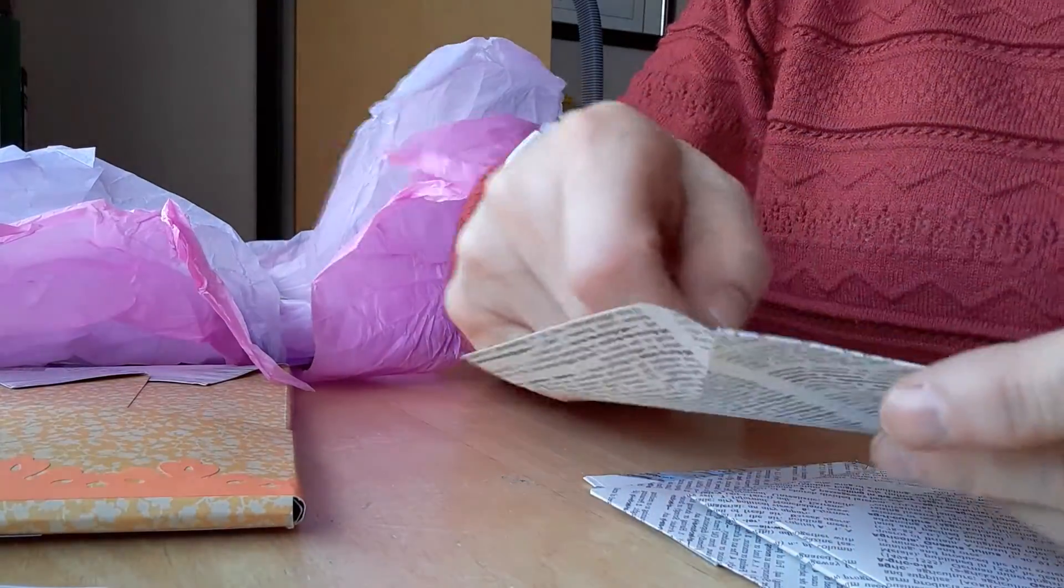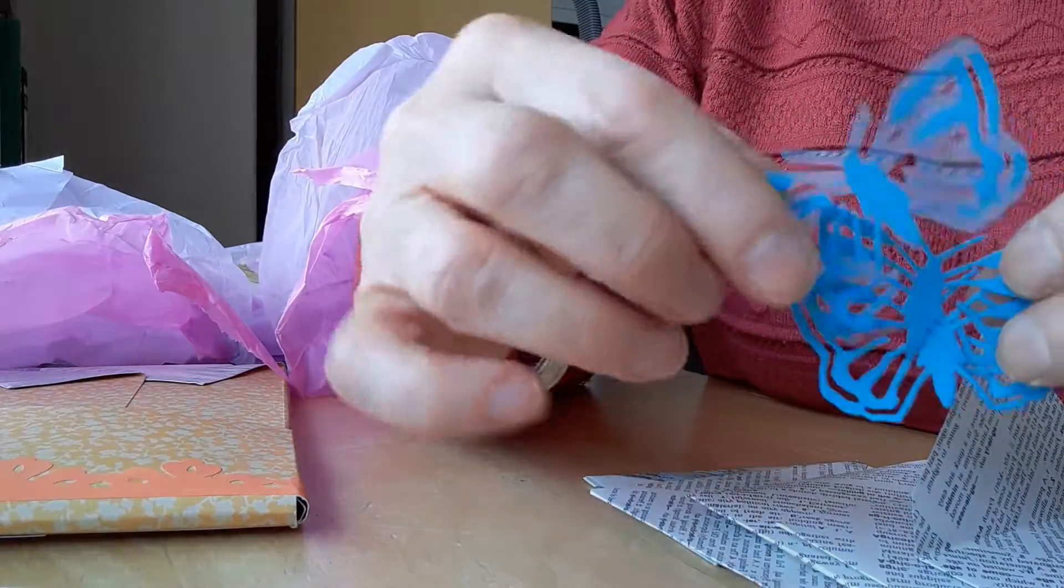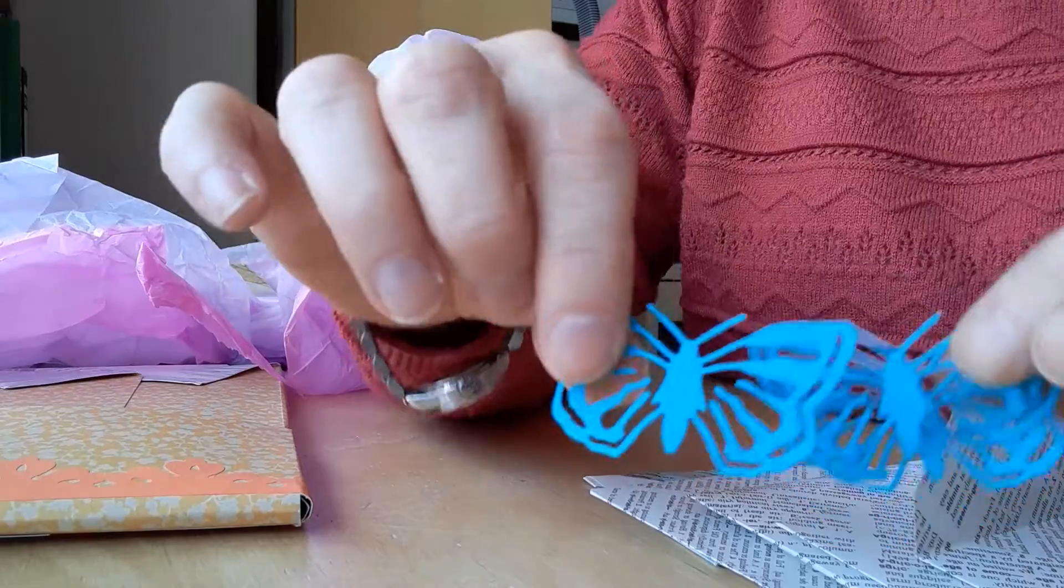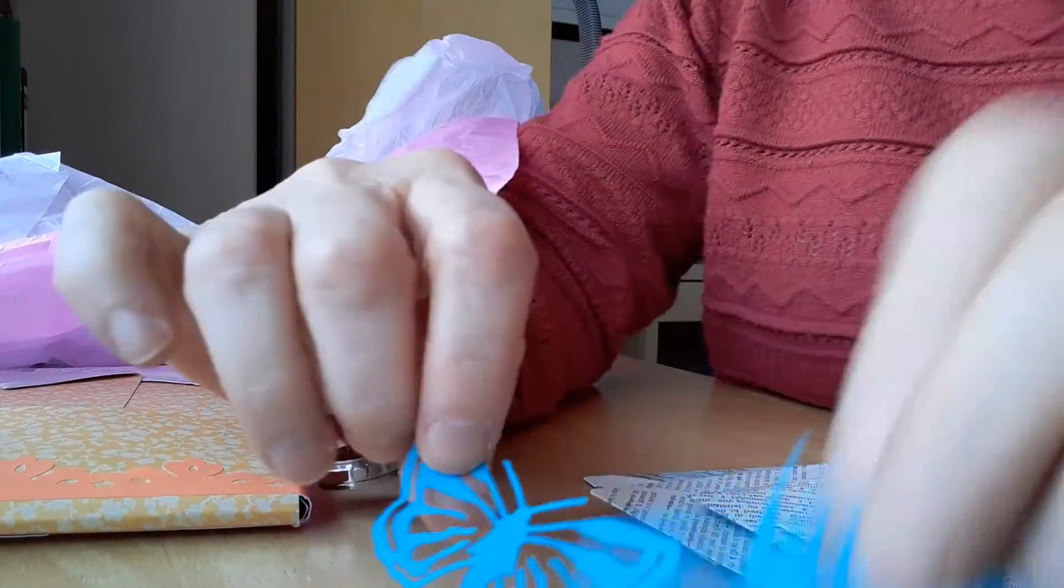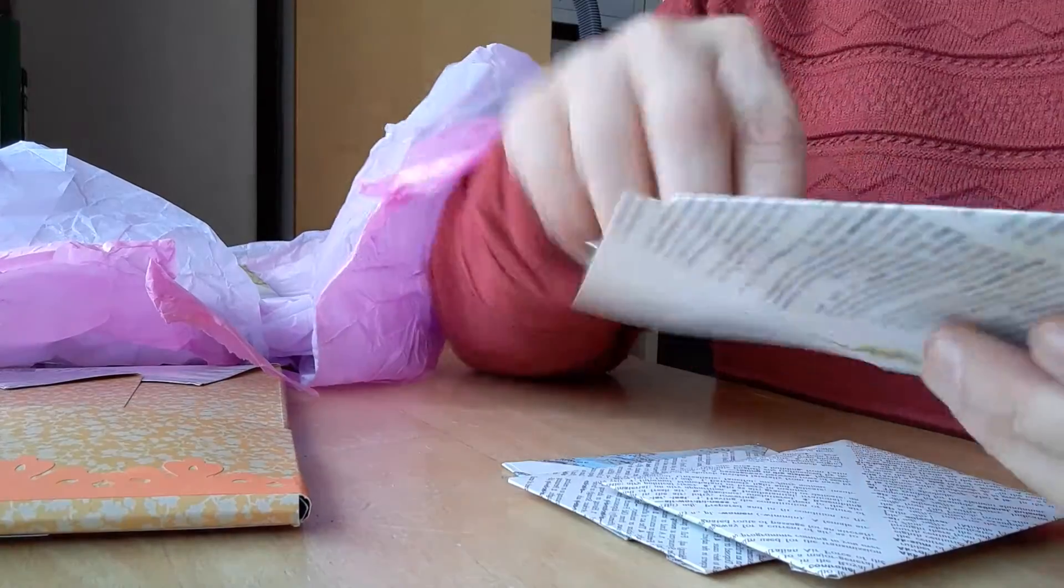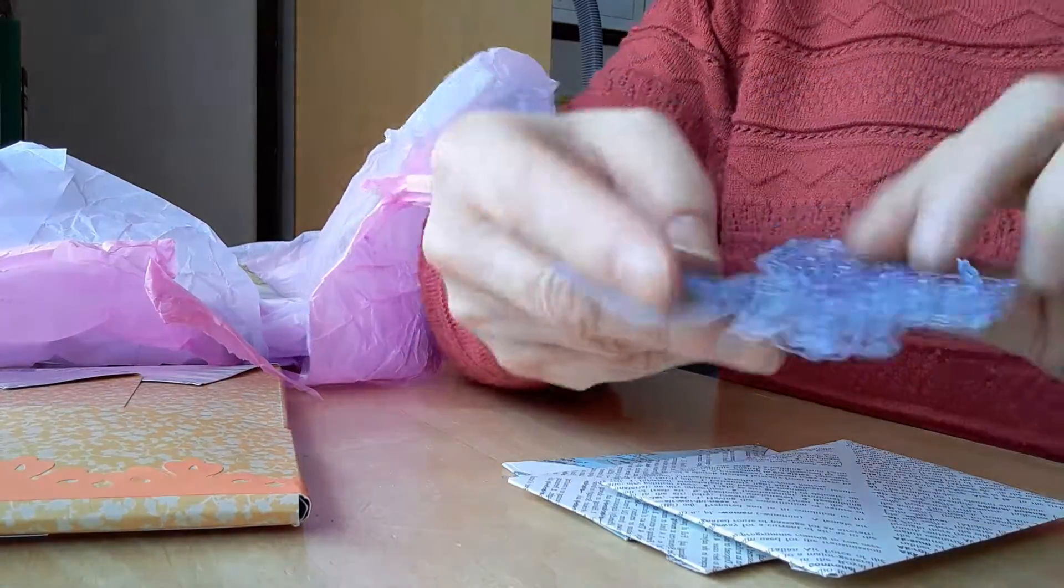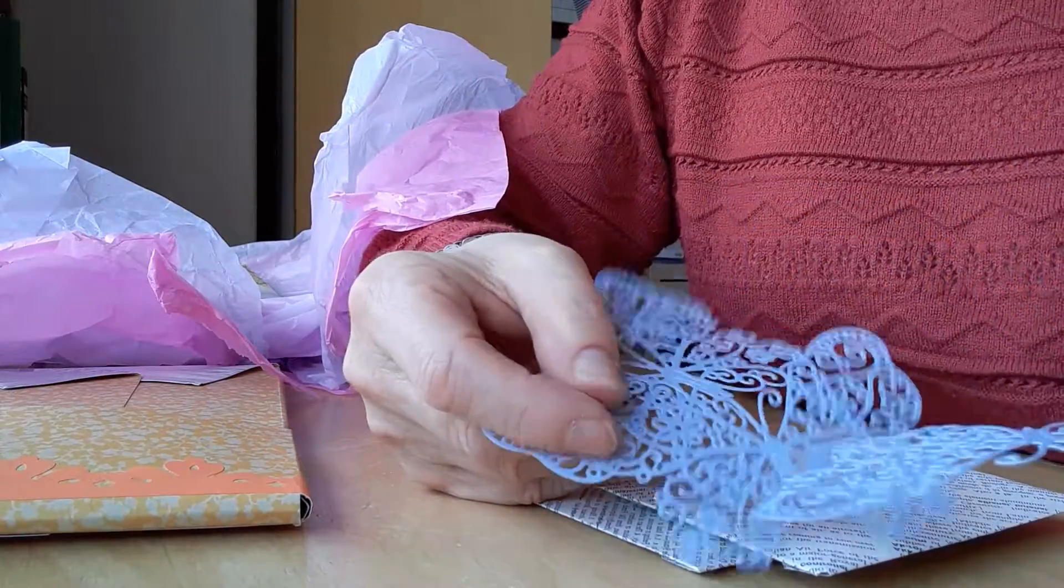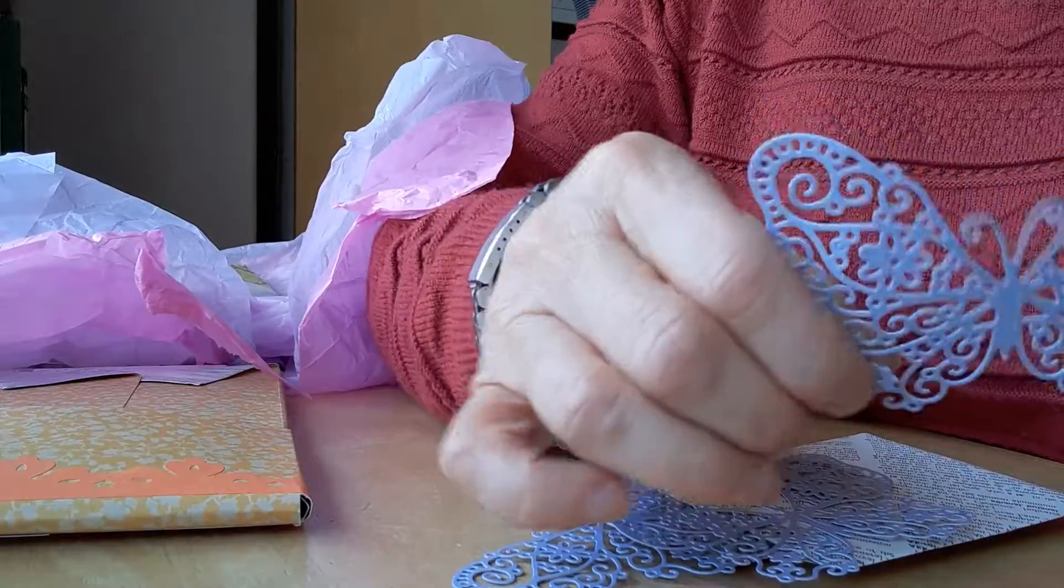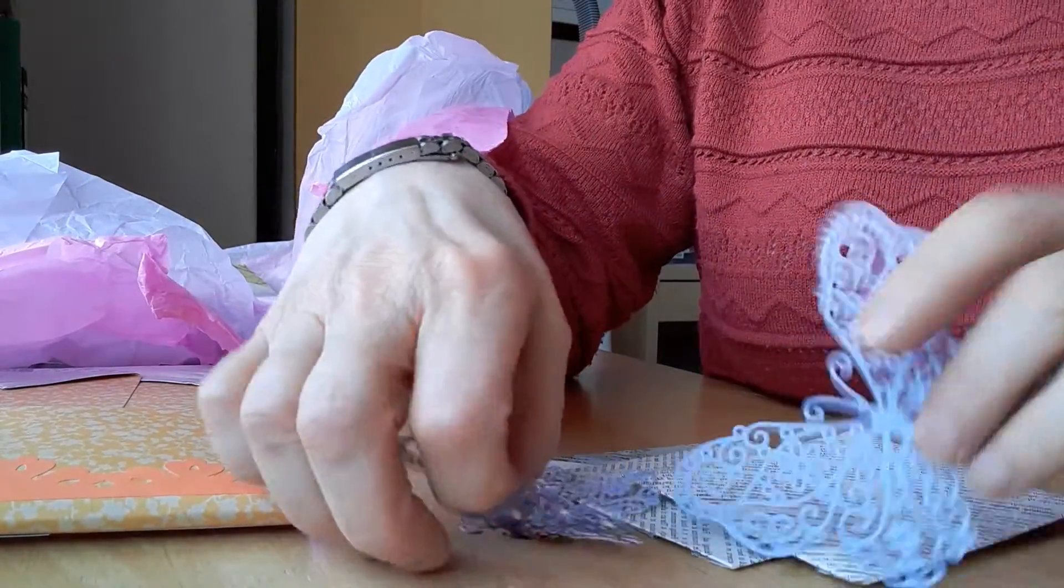Inside the first envelope there's some picket fence die cuts. Irene has obviously put this kit together with Easter in mind. She sent me some blue butterflies, and in the next one there are these gorgeous filigree butterflies that are double-sided so I could use either side. They're just beautiful and she sent me three of those.